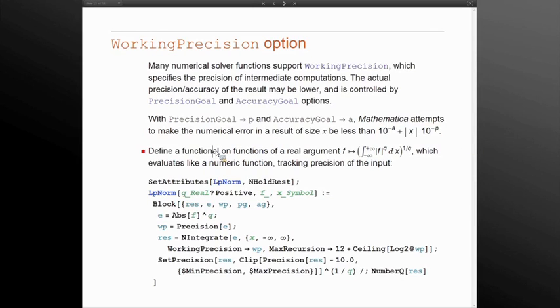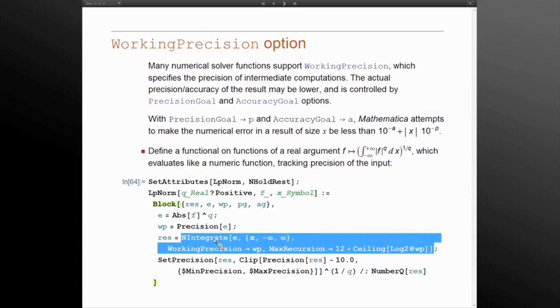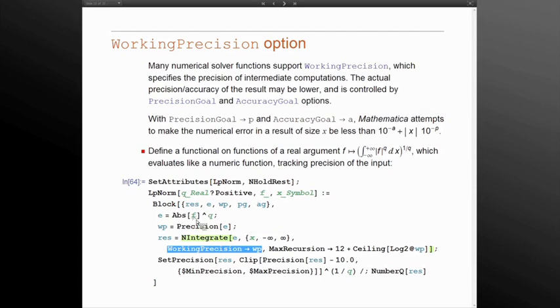Consider here a functional of functions of real arguments which computes an L-Q norm of real functions. We take Q, which is supposed to be a real number, and we take a function and a symbol X. We compute an input to an integral. In doing the computation, Mathematica can actually lower the precision of the expression. So in order for N-integrate not to complain, we have to specify the working precision, which is the working precision of this input. We raise max recursion to get some number back, and once we obtain the result, we want to lower the precision of the result to ascertain that the number of digits actually are accurate.